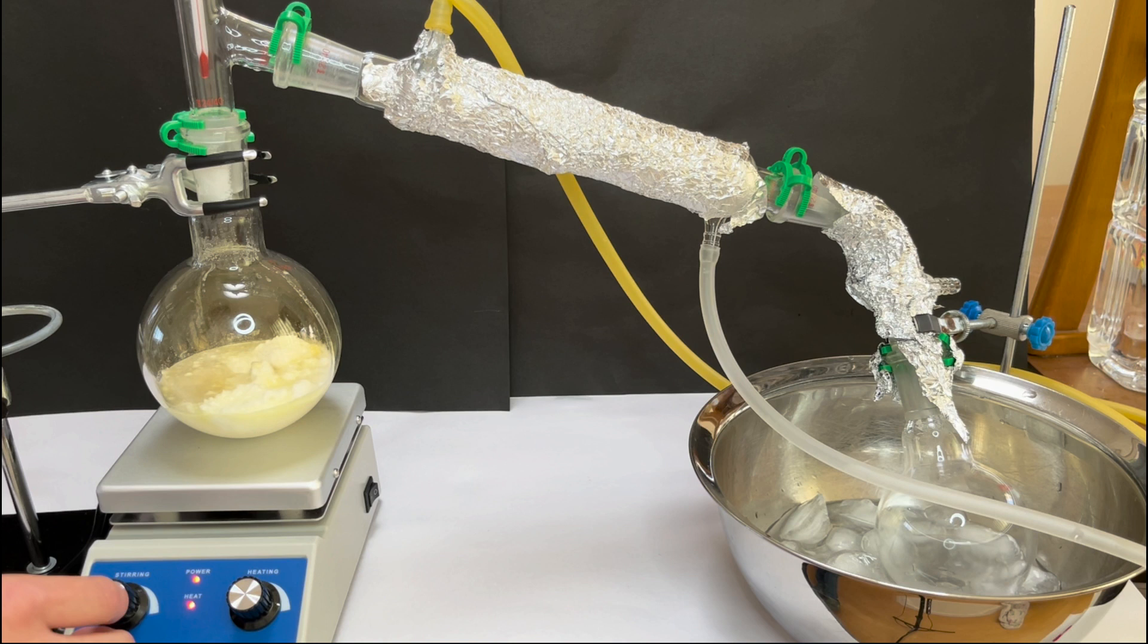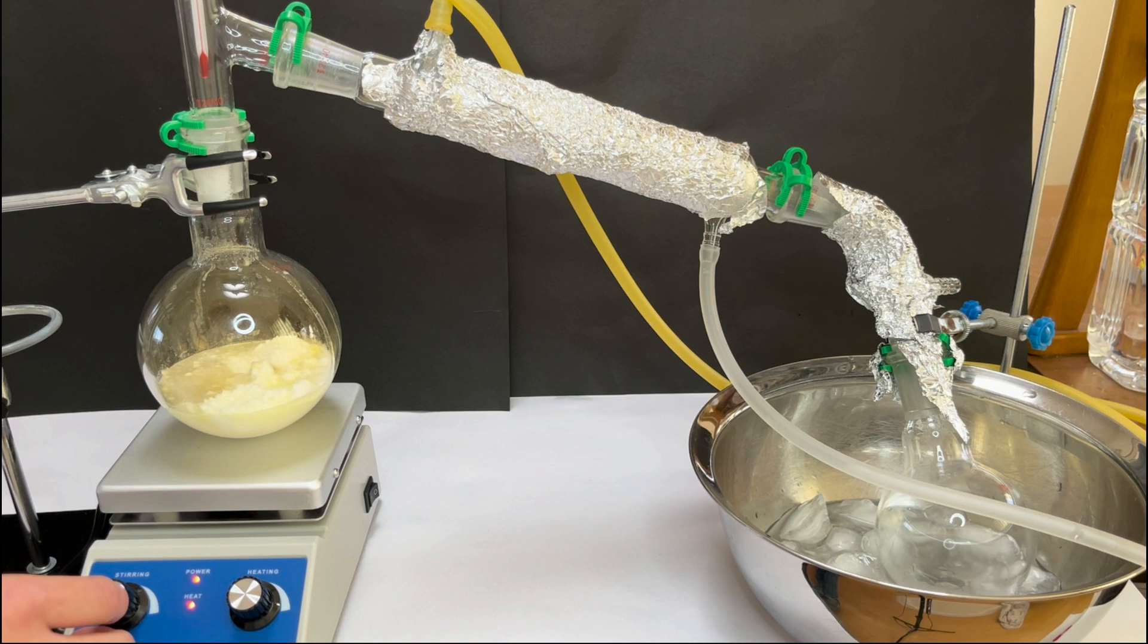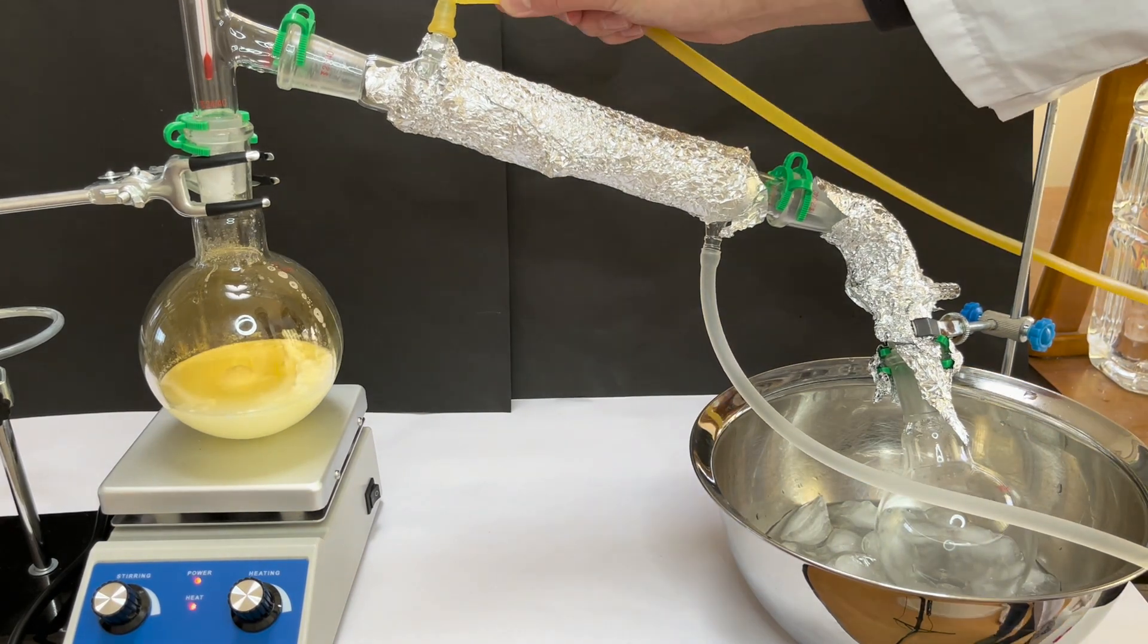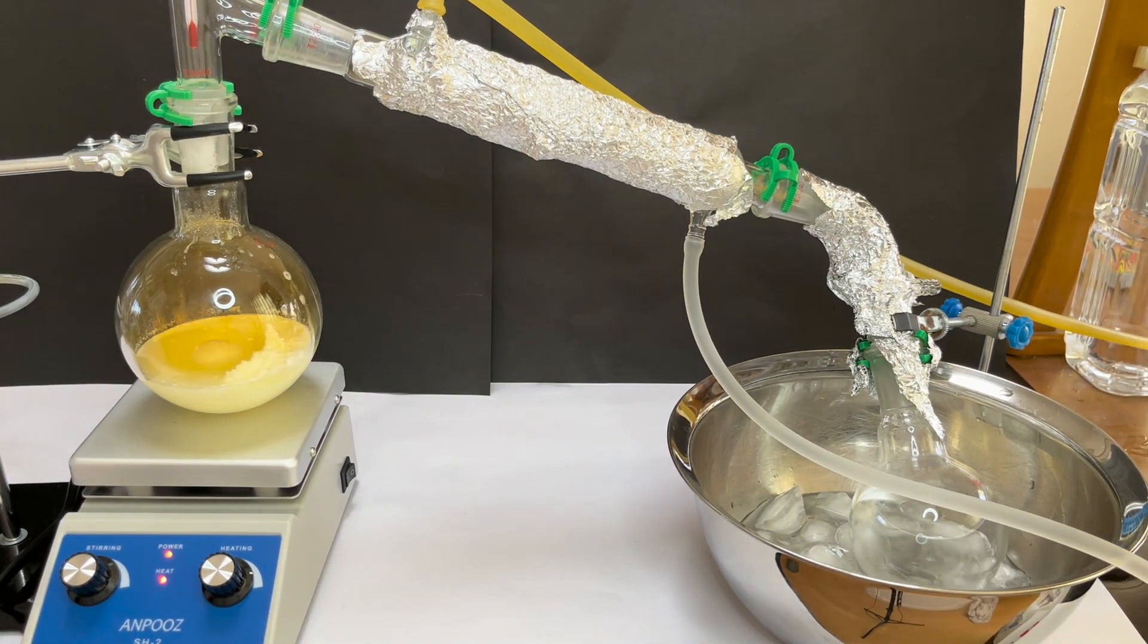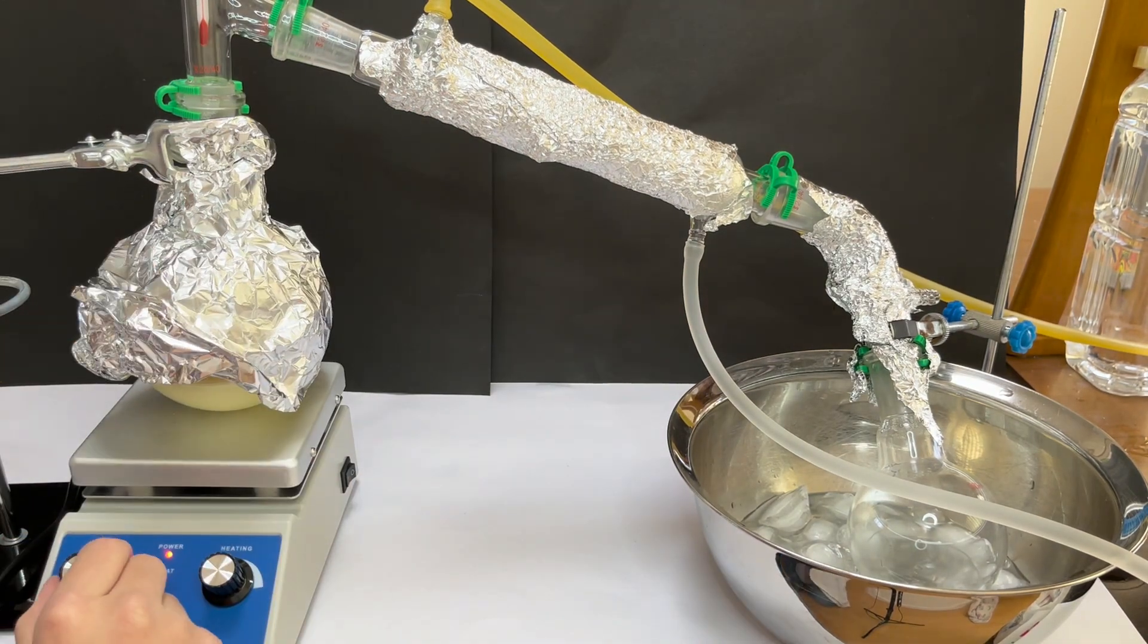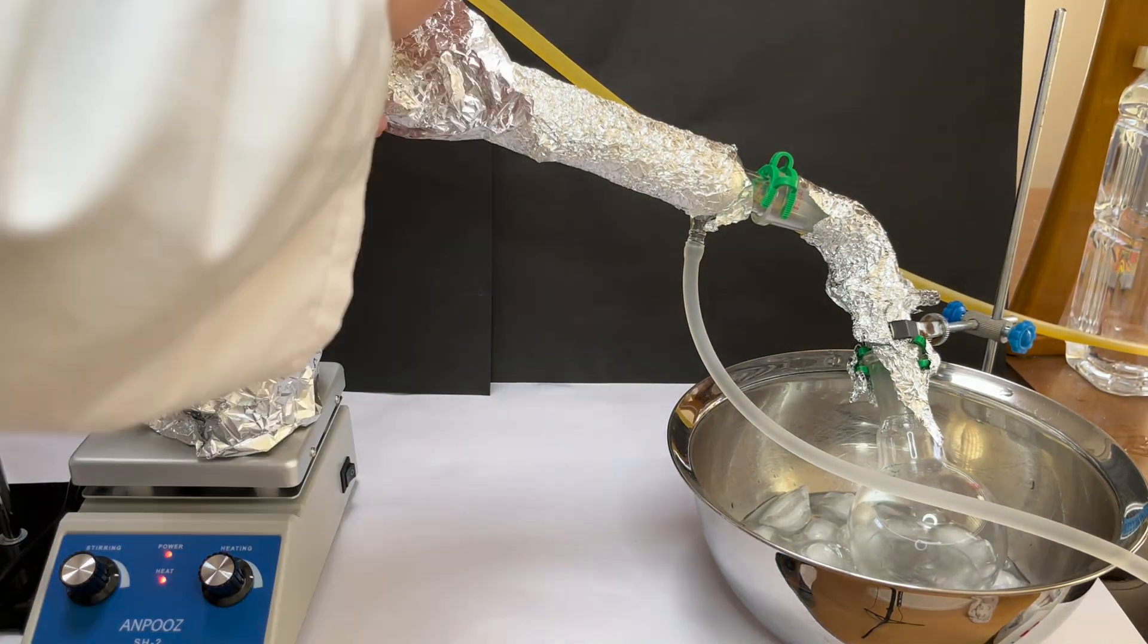When the nitric acid has evaporated, it will be condensed in the distillation cooler and it will drip into the right flask that I'm cooling with ice and water. When I put the sulfuric acid into the flask, it immediately reacts with the ammonium nitrate and releases some yellow gas, which I think is nitric acid vapor.